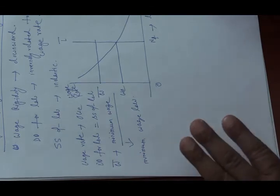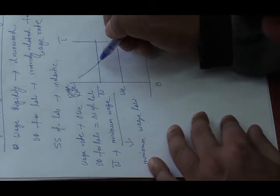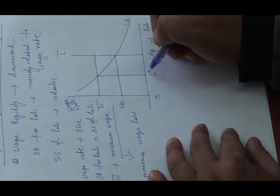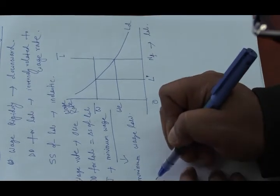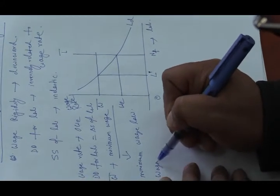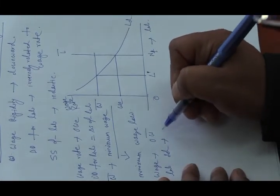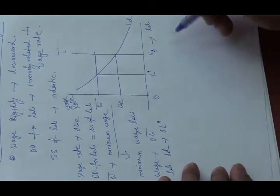In this case, at wage rate W bar, labour demand will be OL star. If wage equals to OW bar, labour demand will be equal to OL star.